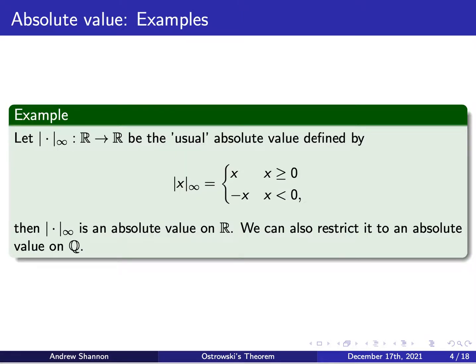So now we'll look at a few examples of important absolute values. For the sake of time, I won't prove that any of them actually satisfy those four axioms, but in general the proofs are not too difficult. If we let double bar sub infinity from the real numbers to the real numbers be the usual absolute value — sending non-negative numbers to themselves and negative numbers to their negatives — then this is indeed an absolute value on the real numbers. And importantly, we can restrict it to an absolute value on just the rational numbers if we want to.